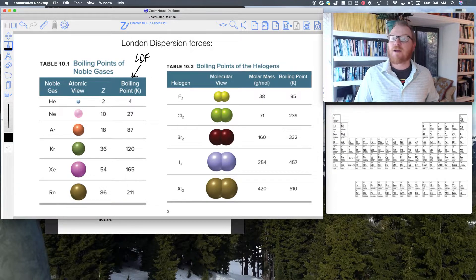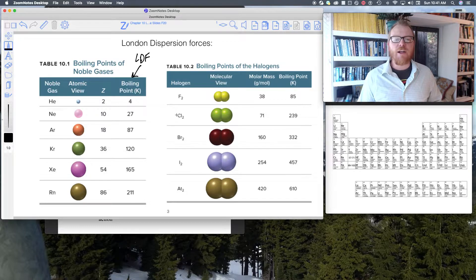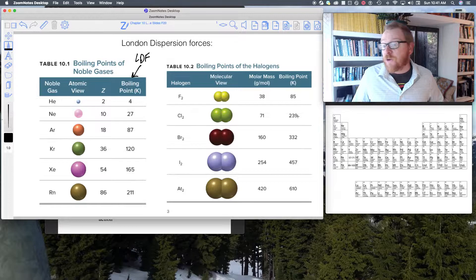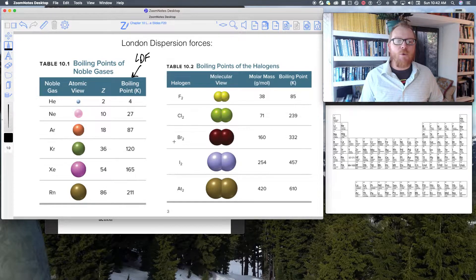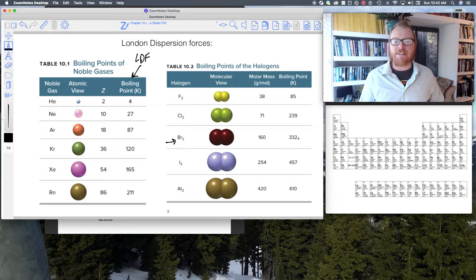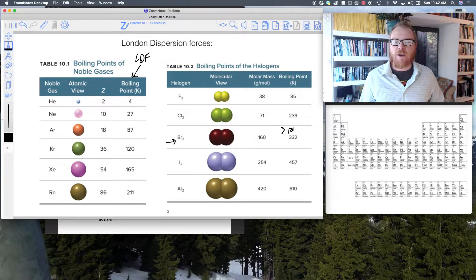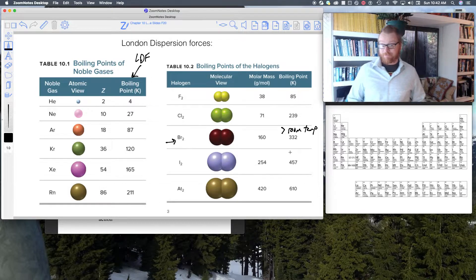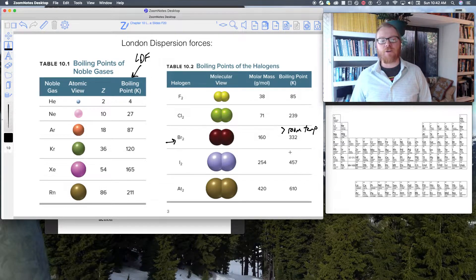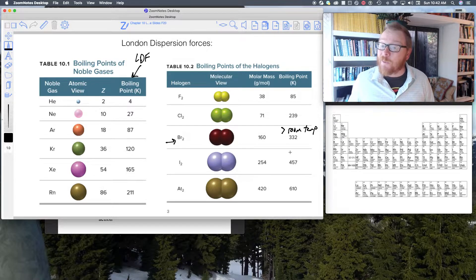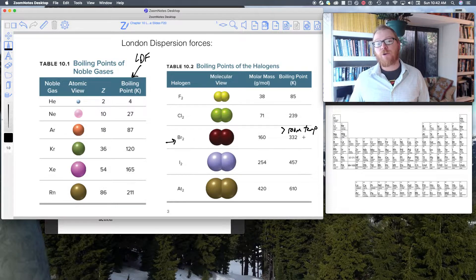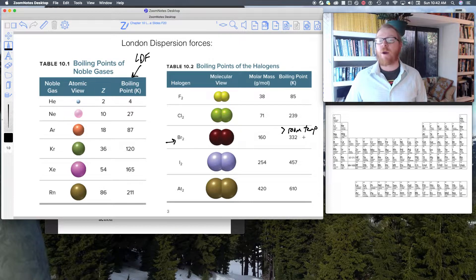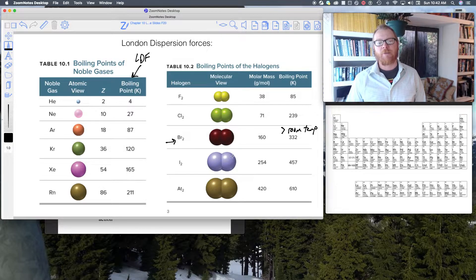If you look at what happens to these things, fluorine is 85 kelvin, so we could say fluorine's intermolecular forces are fairly weak. But look at chlorine, 239 kelvin. That's like minus 30 Celsius. And when you get to bromine, this is amazing. That's a boiling point that's greater than room temperature. So Br2, I don't know if you knew this or not, but bromine is a liquid at room temperature.